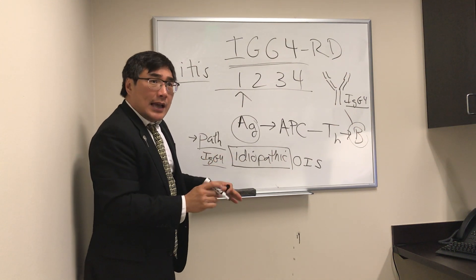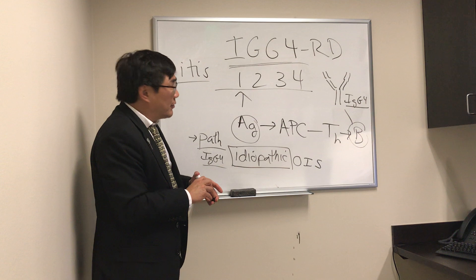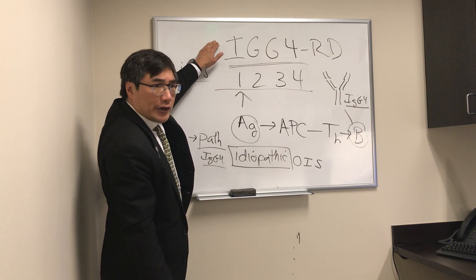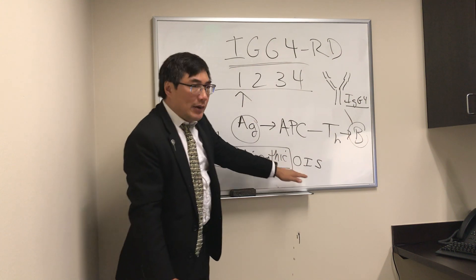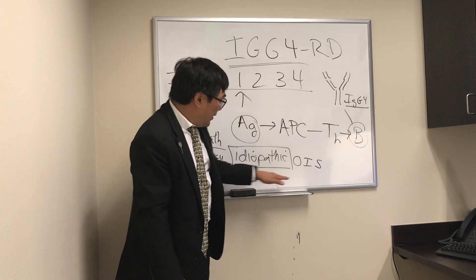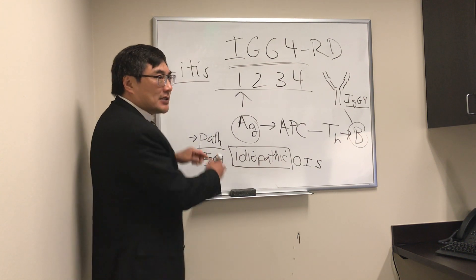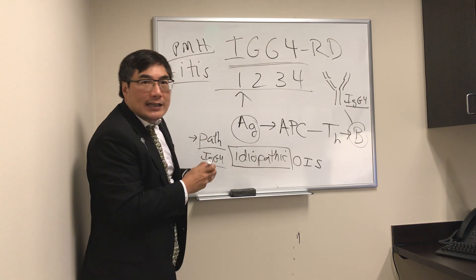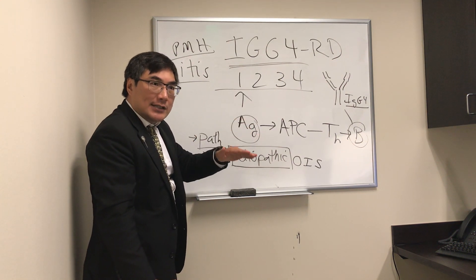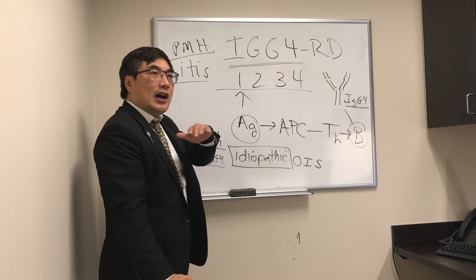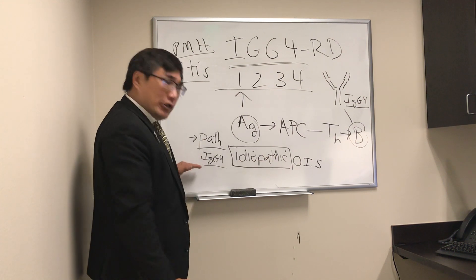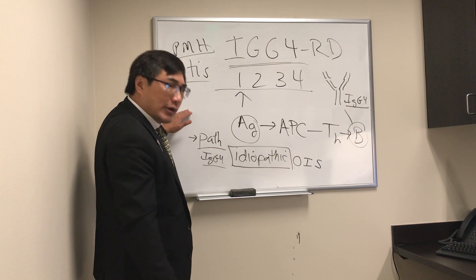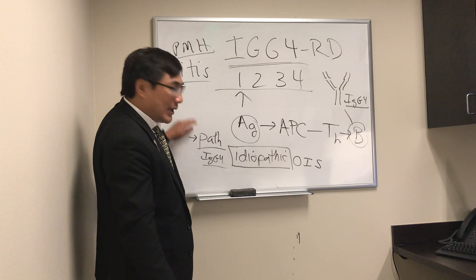Every subspecialty in medicine has their own idiopathic 'itis,' and some of those have eponyms. The really important feature of making the diagnosis of IgG4-related disease is to look for it in other organ systems. In a patient who has orbital inflammatory disease, before we call it idiopathic, we must review the past medical history looking for inflammatory disease in other organ systems. We do the pathology and look for IgG4 staining in the specimen; serum testing is possible but not as reliable.